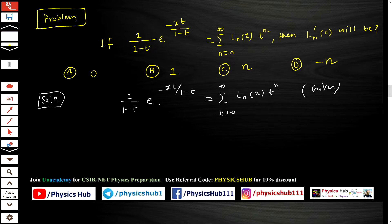You have to find out ln'(0). So what you're going to do, let us say this is equation number 1. So take the derivative with respect to x on both sides of equation 1.